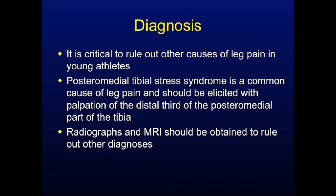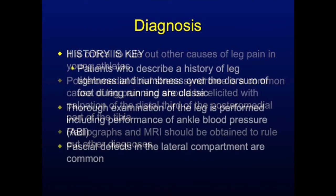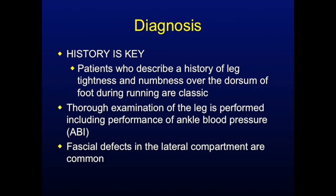Posterior medial tibial stress syndrome is also common and must be ruled out. Standard radiographs should be obtained and we prefer to obtain an MRI to help rule out other diagnoses. Again, an appropriate history is key to proper patient selection. A thorough physical examination is performed to include ABIs. It should be noted that fascial defects in the lateral compartment are fairly common.